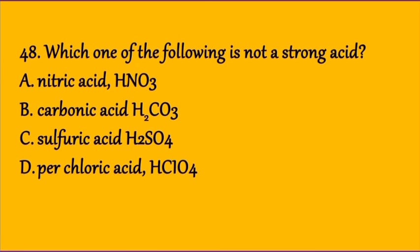Question 48: Which one of the following is not a strong acid? The common six strong acids include nitric acid, sulfuric acid, perchloric acid. The options include carbonic acid. Carbonic acid is not a strong acid — it is a weak acid used in blood buffers. So the answer is B, carbonic acid.